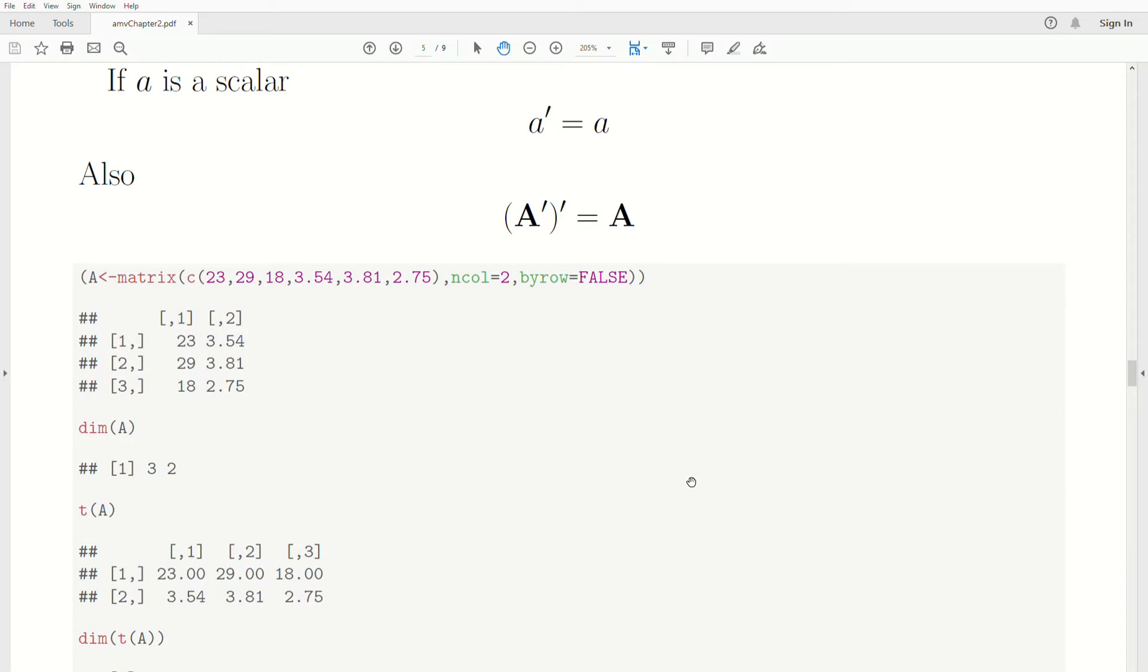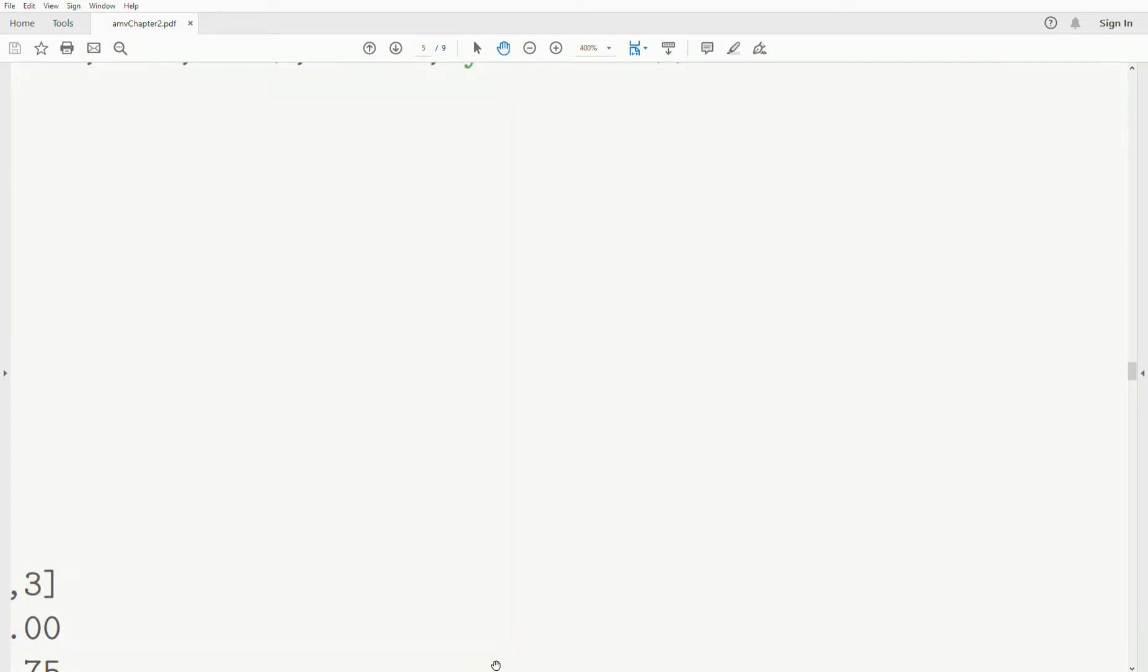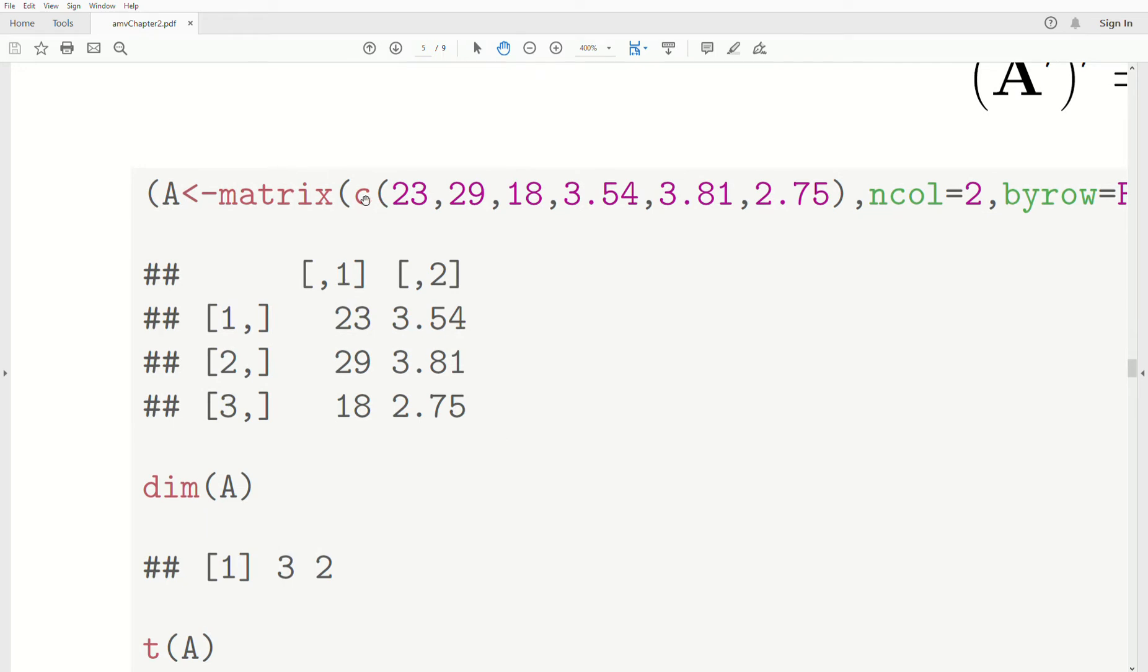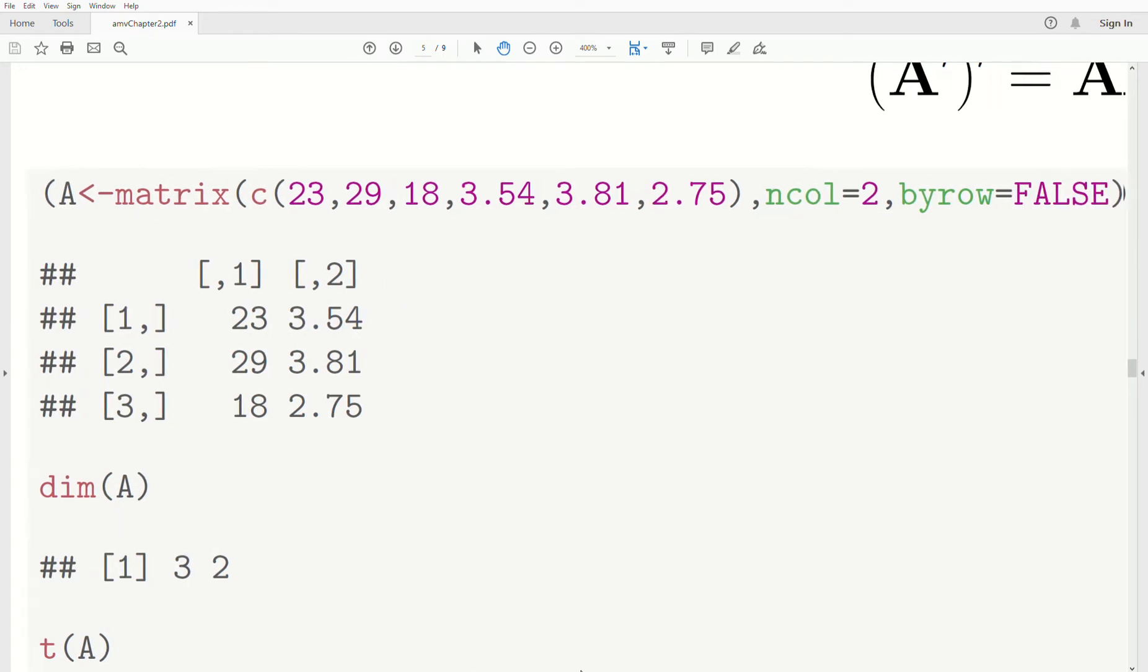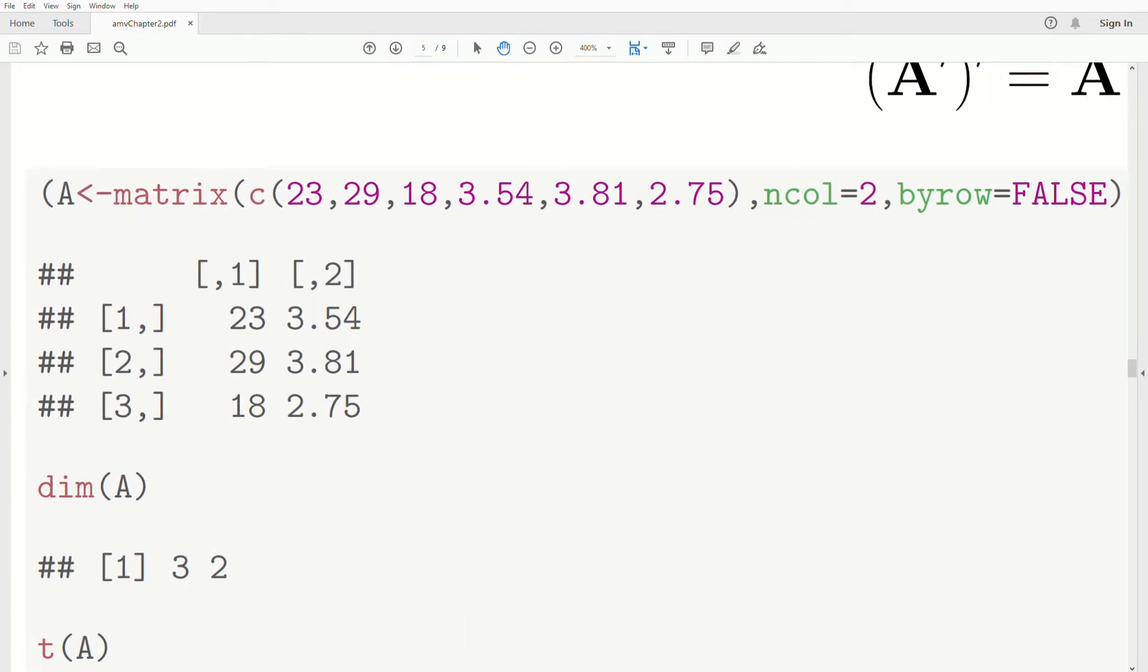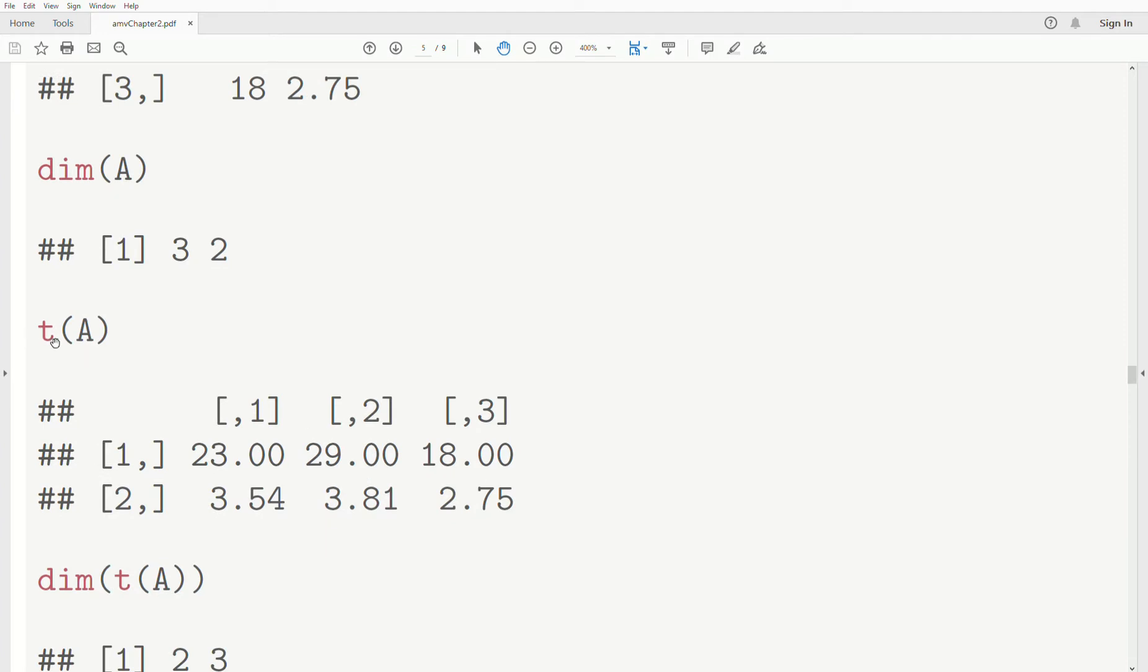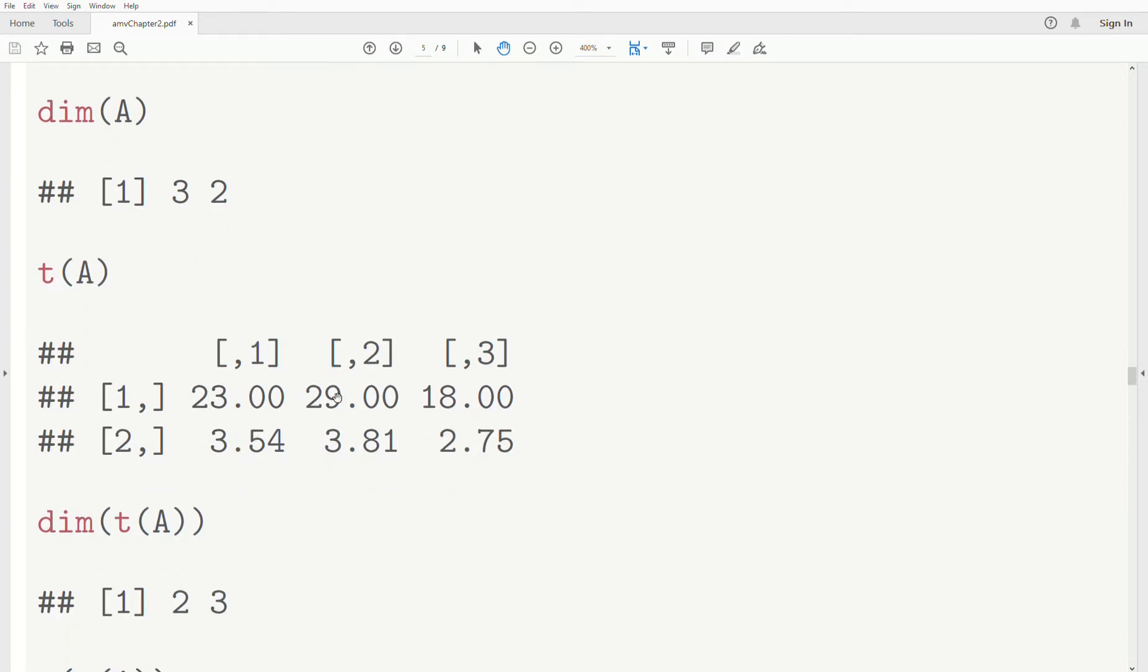So if we look at these in R, let's see if I can do this. So we enter a matrix into A and this is it. So this is what we're talking about up here. The dimensions is 3 by 2, right? 3 rows, 2 columns. The transpose of A is now a 2 by 3 matrix where you just interchange the columns and the rows.